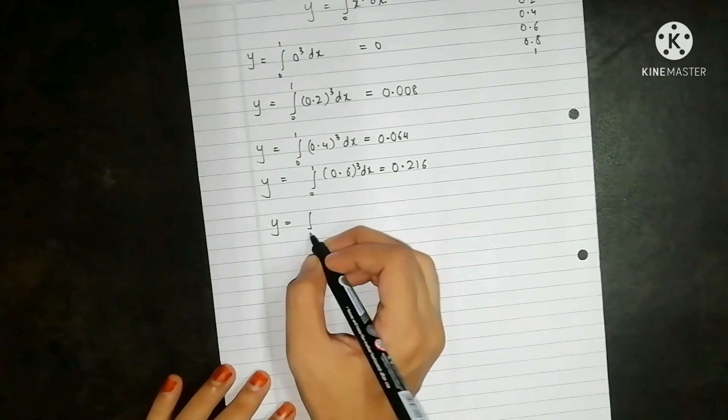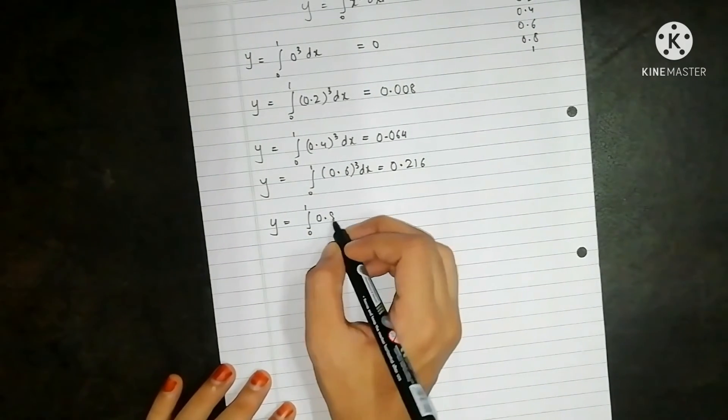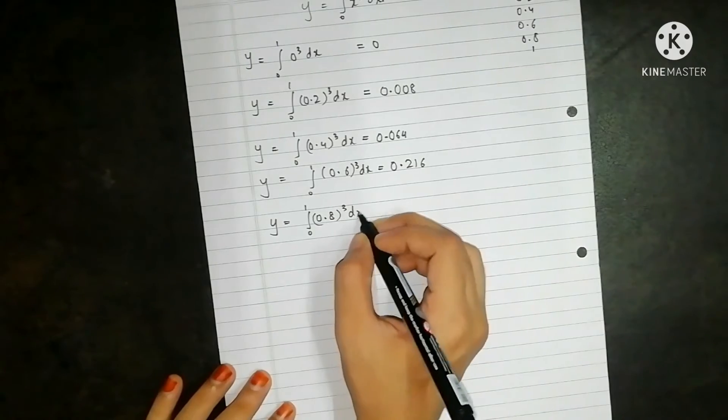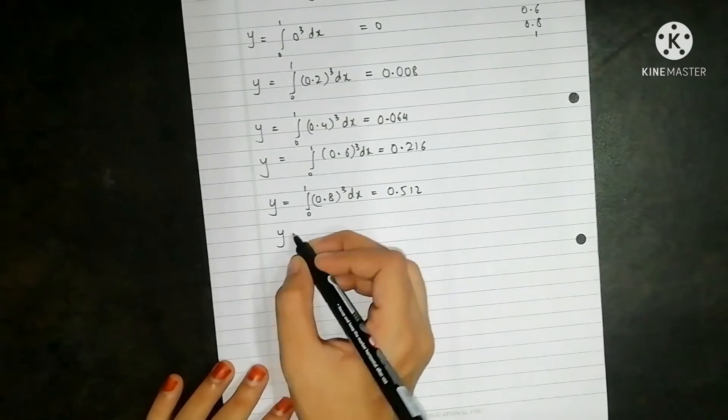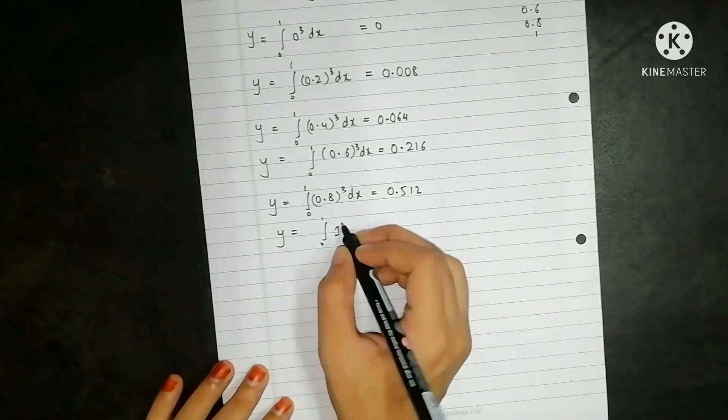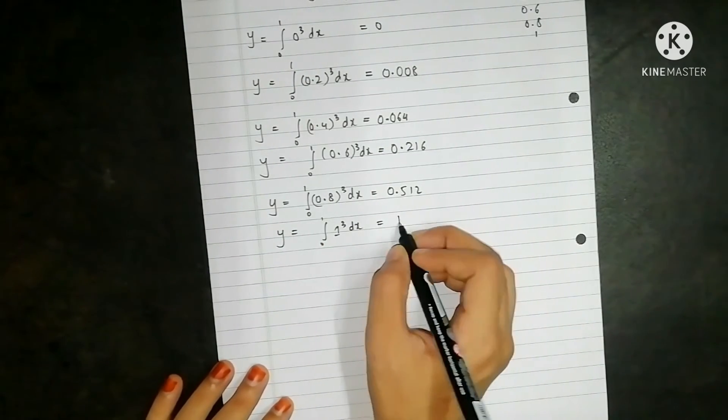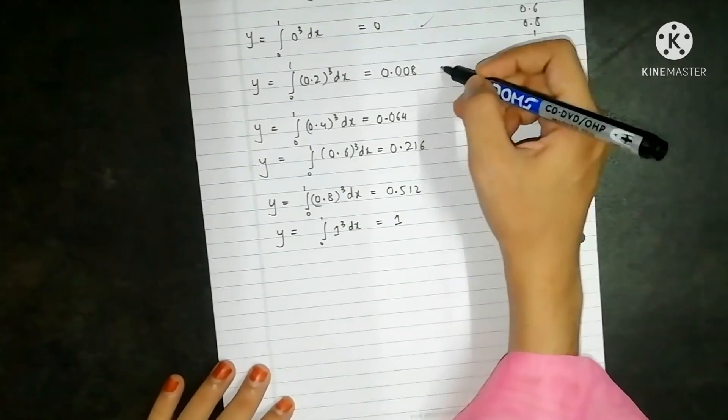Then y is equal to 0 to 1, 0.8 cubed dx, so 0.512. Then y is equal to 0 to 1, 1 cubed dx, and that is equal to 1. So we have the values of y.